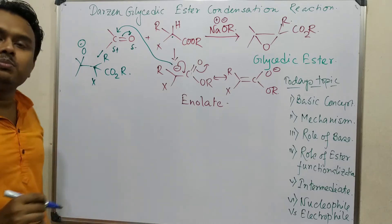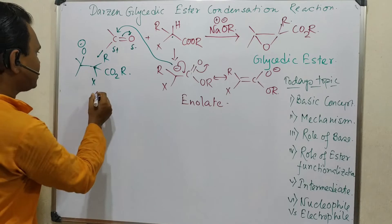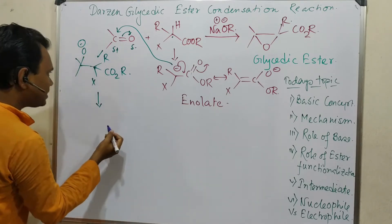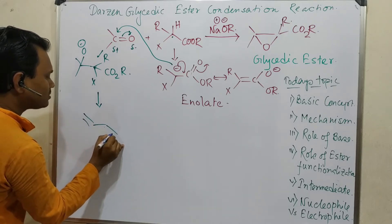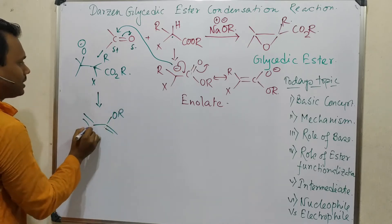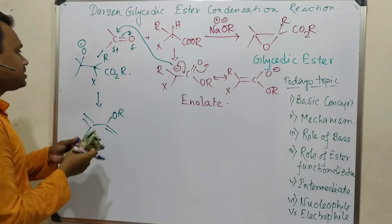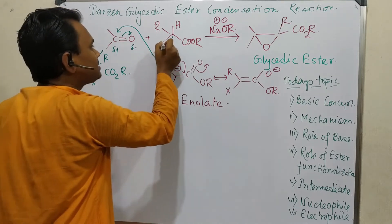I guess up to this it's completely fine. Now the interesting part comes. In case of Claisen, after the condensation reaction, first this is protonated and after that it eliminates one water to produce an alpha-beta unsaturated carbonyl compound - the Claisen product. But the interesting part of this Darzen glycidic ester condensation is this X.